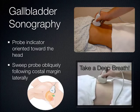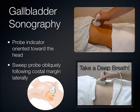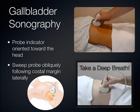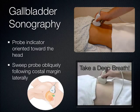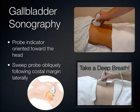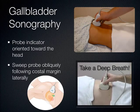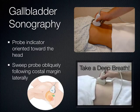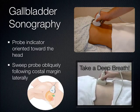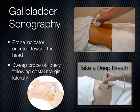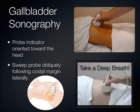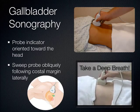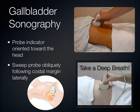Moving on to the gallbladder. This is gallbladder ultrasonography 101. You do a subcostal sweep where you take the indicator and aim it towards the patient's head, have the patient take a deep breath, and follow along the costal margin. The patient takes a deep breath and you slide right along that inferior costal margin. There are so many anechoic structures that sometimes you need a landmark to help identify the gallbladder.